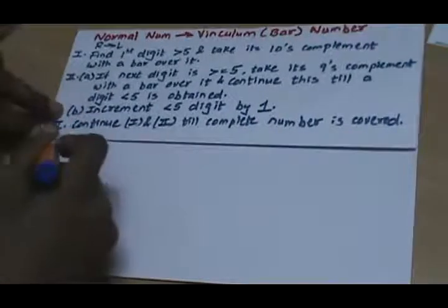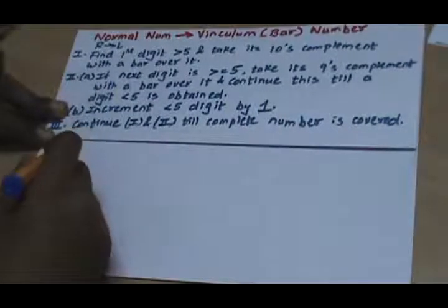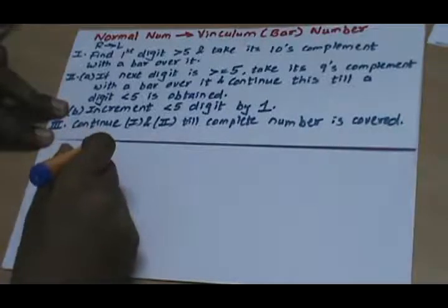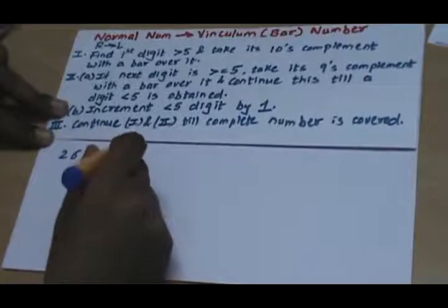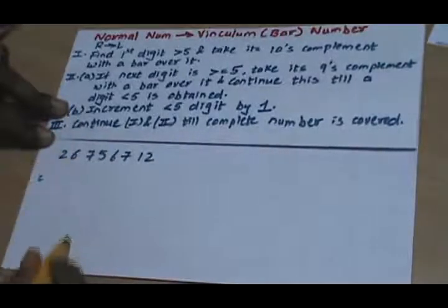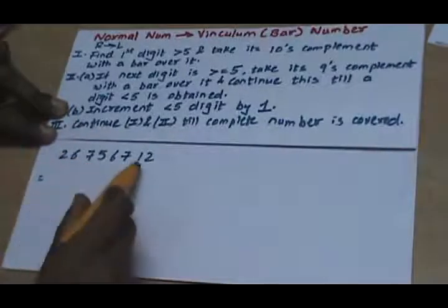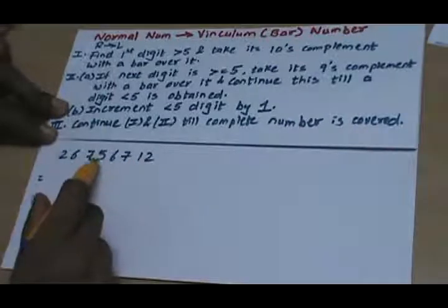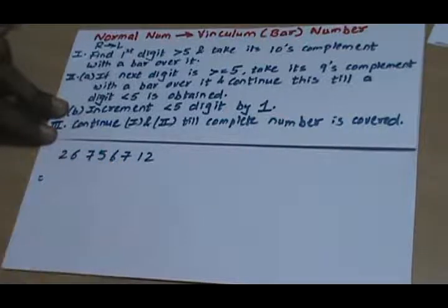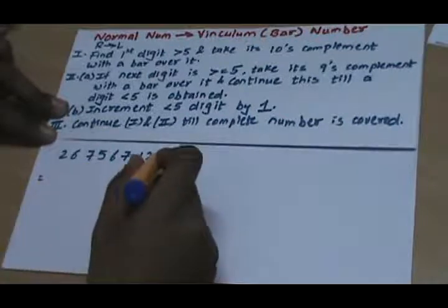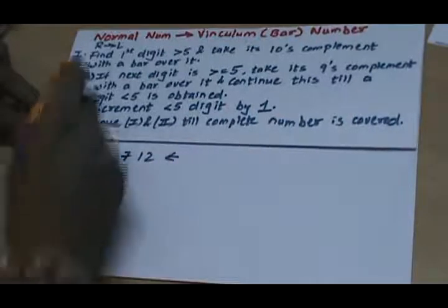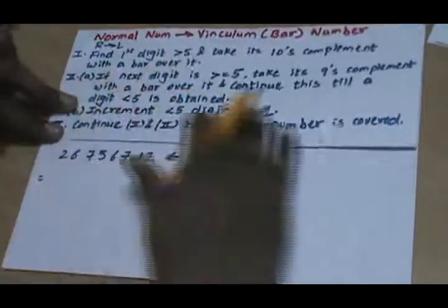Let's say suppose we have a number 26756712. What we are going to do here is convert all digits which are greater than 5 to smaller digits. We follow a right-to-left approach and find the first digit which is greater than 5.